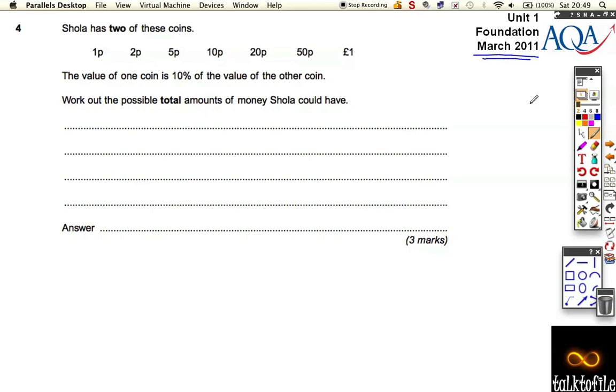Shiloh has two of these coins, and she's got a 1p, a 2p, a 5p, a 10p, a 20p, a 50p, and a £1 coin.